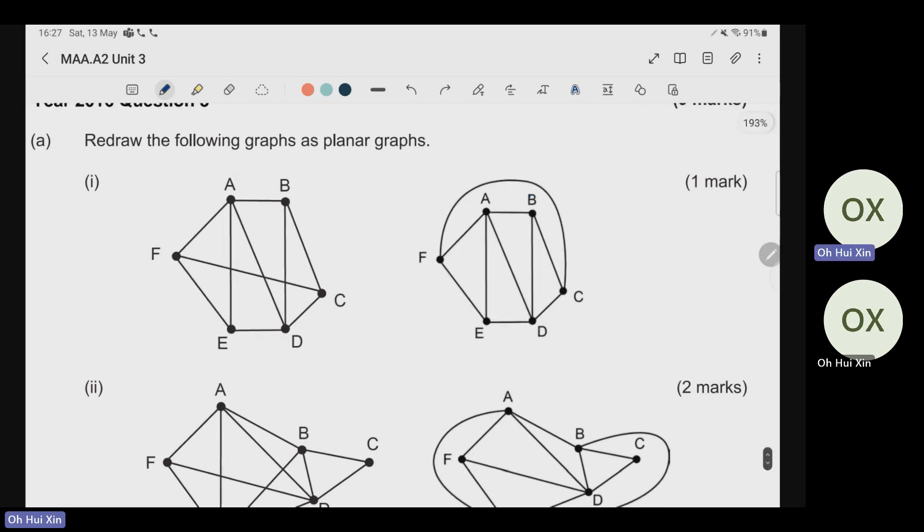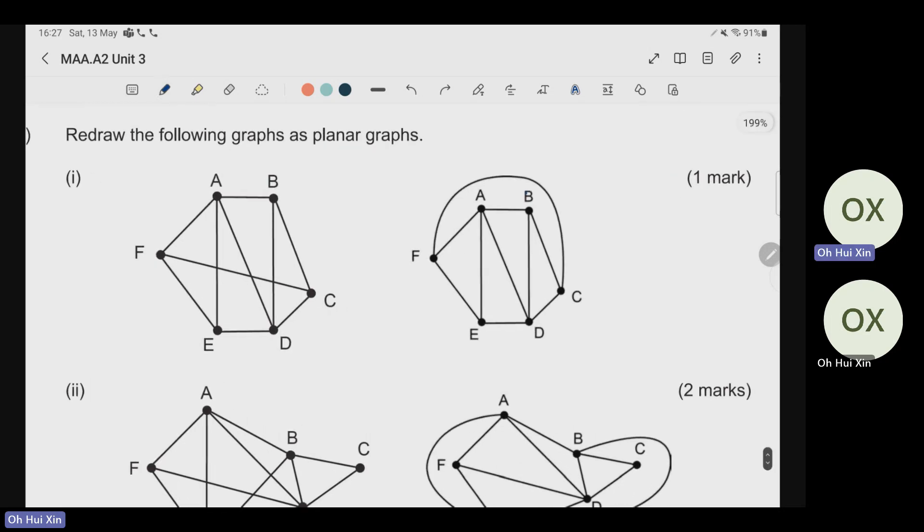When you look at part one, you can see that these are the parts where you have your edges crossed over each other. So it is quite obvious that as soon as you move A, C outwards, then all your crossing over will be solved. In this case, when you redraw your F, C, then you will be able to get one mark for this question.